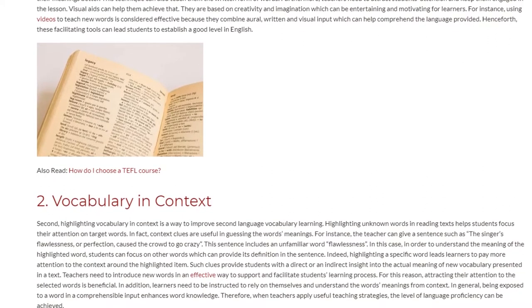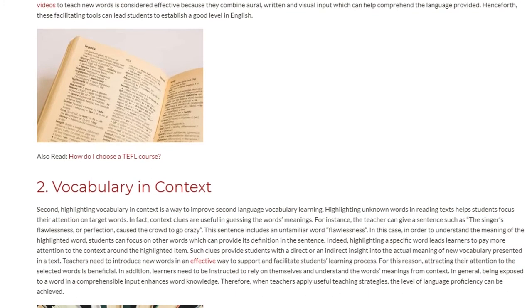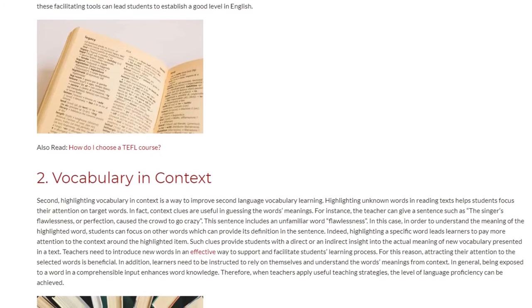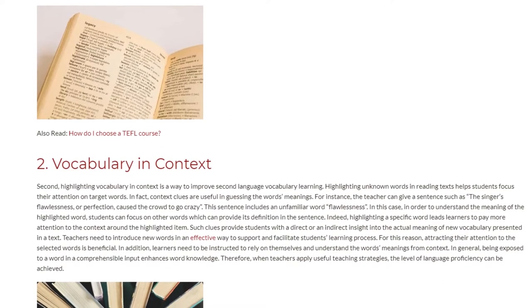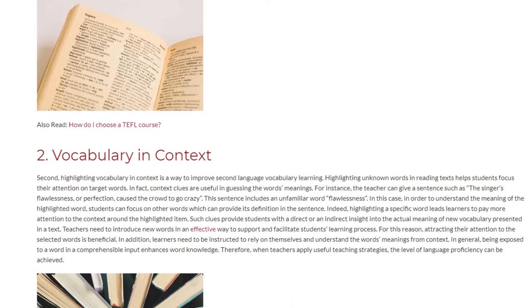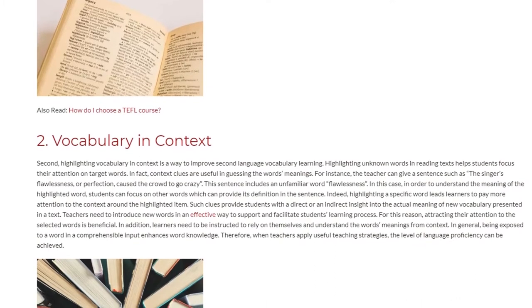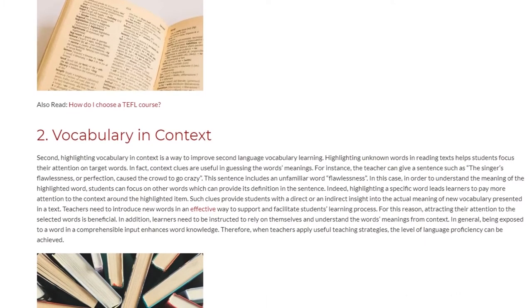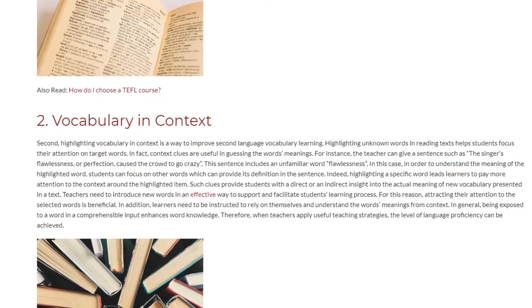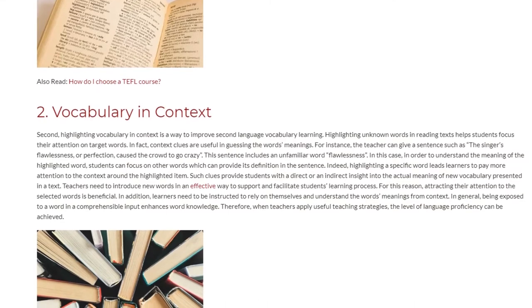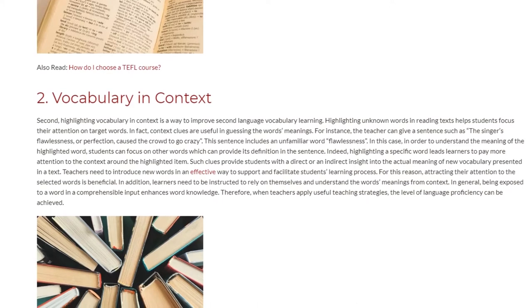For instance, the teacher can give a sentence such as: 'The singer's flawlessness, or perfection, caused the crowd to go crazy.' This sentence includes an unfamiliar word — flawlessness. In this case, in order to understand the meaning of the highlighted word, students can focus on other words which can provide its definition in the sentence. Indeed, highlighting a specific word leads learners to pay more attention to the context around the highlighted item. Such clues provide students with a direct or an indirect insight into the actual meaning of new vocabulary in a text.